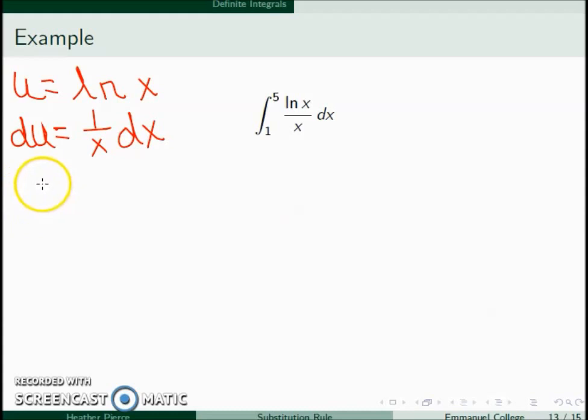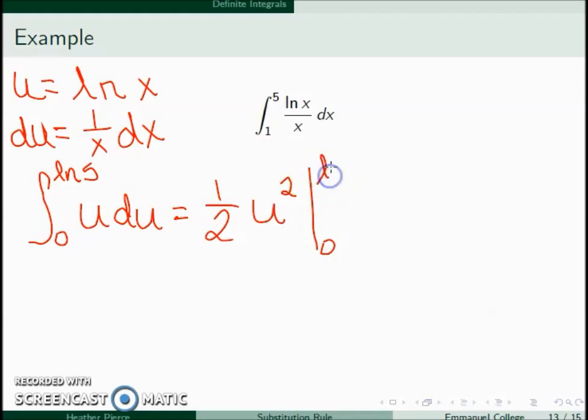So this becomes the integral where the ln of x becomes a u and the 1 over x dx becomes du. When x is 1, the natural log of 1 is 0, and when x is 5 we get ln of 5. So this is 1 half u squared going between 0 and ln of 5, which when you work out you get 1 half ln squared of 5.